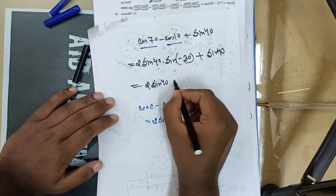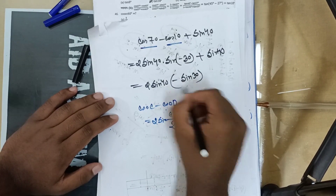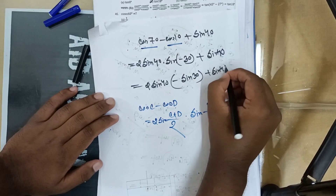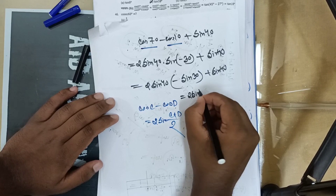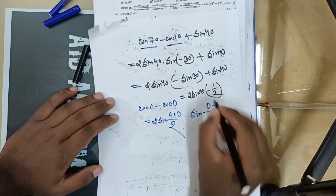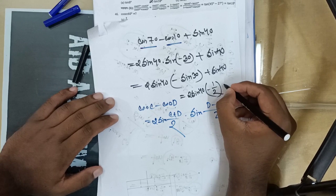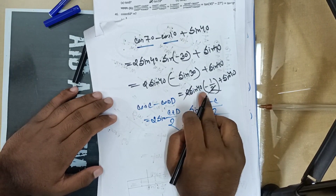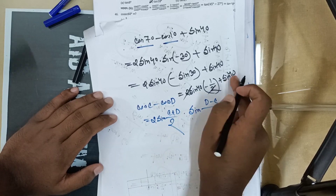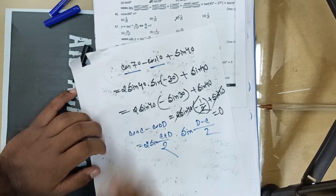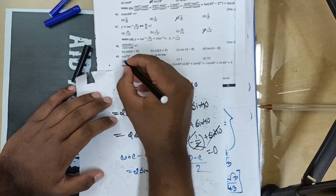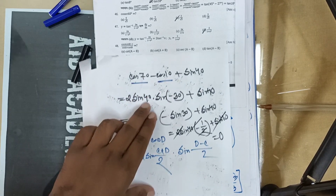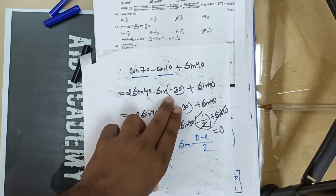sin(−θ) = −sin θ. So sin(−30) = −sin 30. And 2·sin 40. sin 30° = half, so minus half. Back to sin 40: we have 2 sin 40 × (−1/2) = −sin 40. So minus sin 40 plus sin 40 equals 0. Then: 10 minus 2, minus 3, minus 4 — we have taken the 2, so 3 plus sin 40, minus sin 40 equals zero, confirming the result.